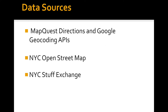The data sources of our map are MapQuest directions and Google geocoding APIs to provide location and routing services, as well as NYC Open Street Map and NYC Stuff Exchange to present our tool in the context of Hurricane Sandy.